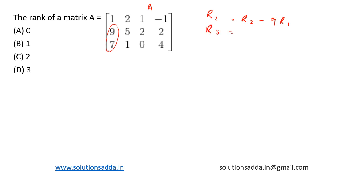Performing this transformation, we get the following: 1, 2, 1, minus 1. Then this row will be 0, minus 13, minus 7, 11, and this row will be 0, minus 13, minus 7, and 11.